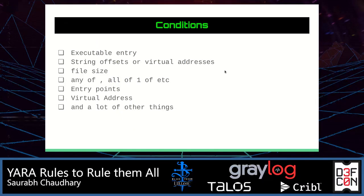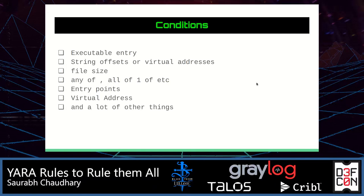Coming to the conditions: most malware targets Windows systems, they are PE files, and you can dissect them. You will find they have headers and sections, so you can give arguments and conditions to your YARA rules based on the executable entry, the string offset or virtual offset, file size, entry points, and a lot of other things. For example, if there is a PE file which is less than XYZ KB, you can define — match the file which has an entry point like this and a file size less than XYZ KB — or based on the magic number. There are a lot of conditions you can implement.